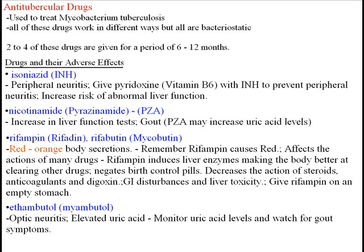The first drug in the category is isoniazid, also known as INH. Adverse effects for this drug include peripheral neuritis, which is characterized by paresthesia of the hands and feet. To combat or prevent this, give vitamin B6 with the INH to prevent the neuritis. Also, there is a chance for increased risk of abnormal liver function, so liver function tests should be done before and during INH therapy.